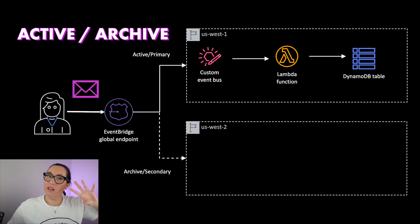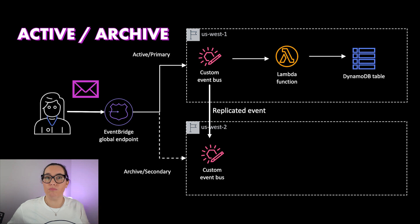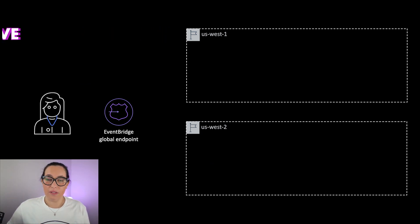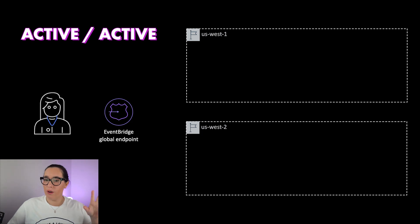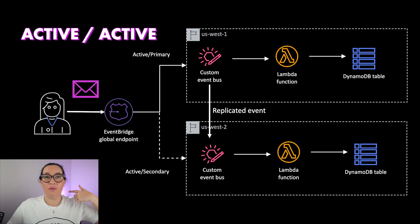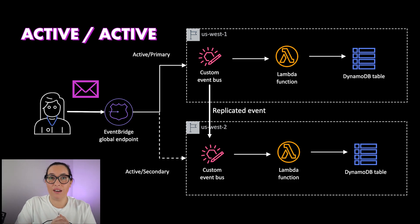The first is active-archive: we have a primary region with the full stack deployed, and a secondary region that is just receiving replicated events — we are just archiving those replicated events there. If something goes bad, we can take those events from there. But the most interesting solution is the active-active approach, where we have two fully deployed stacks both up and running. If something happens, the failover occurs and events go to the secondary region.